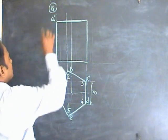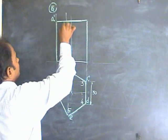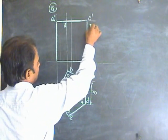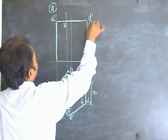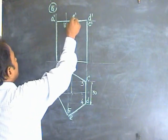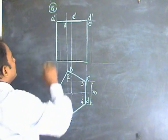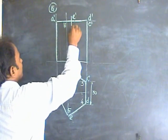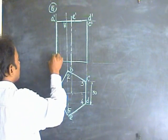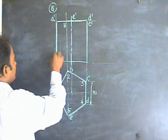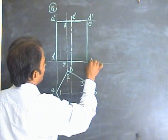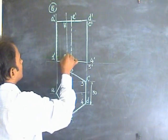At the top you have A dash, B dash, C dash, D dash, and E dash. A dash, E dash, and D dash are visible; C dash and B dash are invisible. This line is the axis line. Similarly, draw the bottom points: 1 dash, 2 dash, 3 dash at the bottom, and 4 dash, 5 dash at the top.